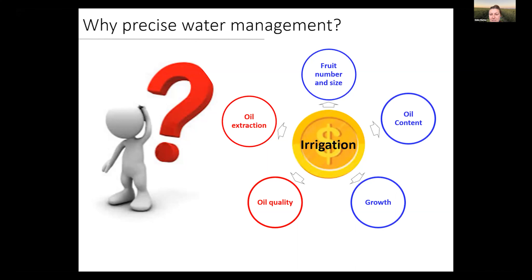You can see that some of these aspects are in blue and some are in red in the slide. The reason is that in olive, some processes like fruit number and fruit size are positively affected by irrigation, but others like oil quality can be negatively affected by excessive irrigation. This makes irrigation management of olive particular and more complicated, because you have to manage both irrigation and stress well.